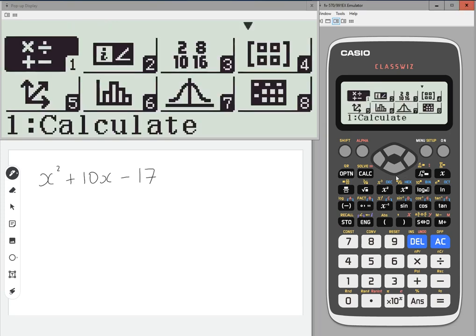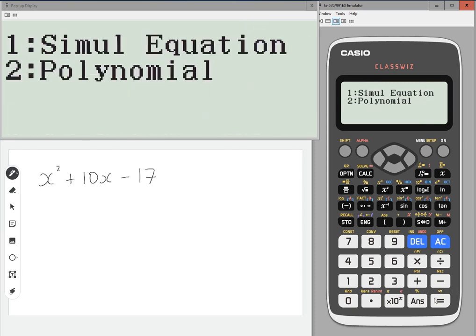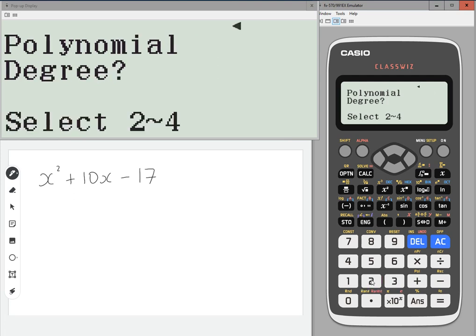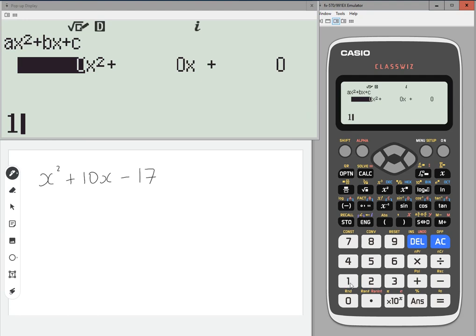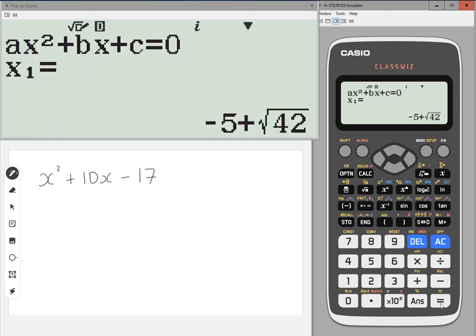So we go to menu and you want to scroll down until you hit A, press equals, go to polynomial, degree two, that's a quadratic. And we're going to type in 1x squared plus 10x, take away 17, so minus 17, and then press equals.